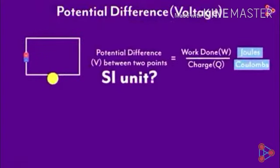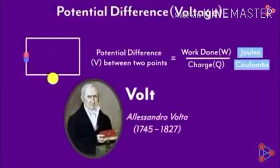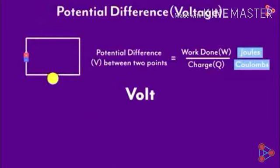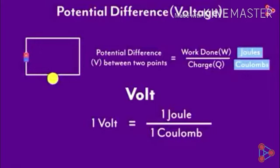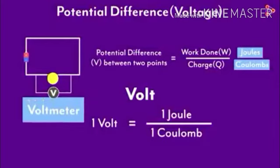Using this formula, we can find the unit of potential difference. V = W/Q. The unit of W, which is work, is Joule. The unit of charge transferred Q is Coulomb. So 1V = 1 Joule / 1 Coulomb, and 1 Joule per 1 Coulomb is called Volt. So the SI unit of potential difference is Volt. When we say potential difference is 1 Volt, it means that the work done is 1 Joule to transfer the charge of 1 Coulomb.